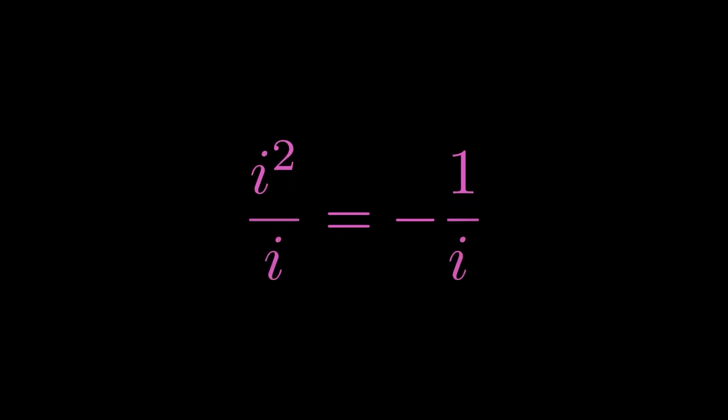If we then divide by i on both sides, we see that the left side simplifies to i. Now on the right side, we have 1 over i. Let's take a closer look at what that means.